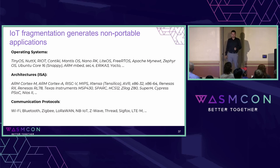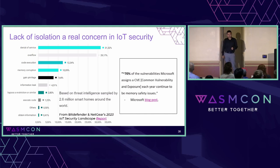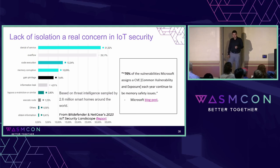Fragmentation spans operating systems, architectures, instruction set architectures, and communication protocols, for example. WebAssembly does help with some of these. Lack of isolation is a real concern in these environments, because we often don't have MMUs or memory protection — the stuff we're used to. A large percentage of security vulnerabilities are actually related to memory problems, and these are very vulnerable in IoT environments.